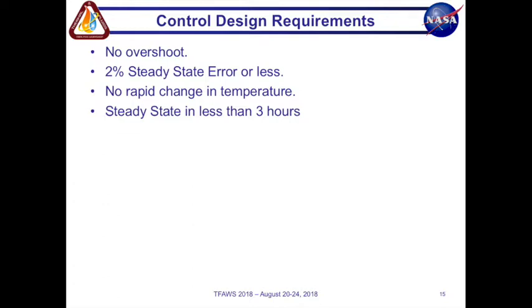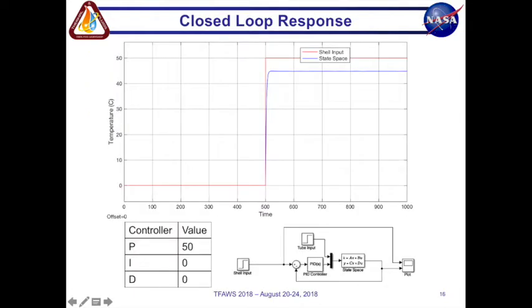So as you can see once we did a closed loop response with a proportional controller you get a massive spike. The reaction time is as you can see is maybe less than 20 seconds. But it still doesn't reach steady state or our 2% steady state value with a proportional controller of 50. So it doesn't satisfy our design criteria.